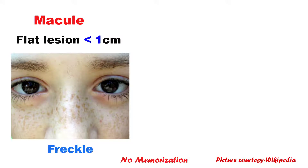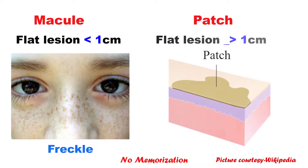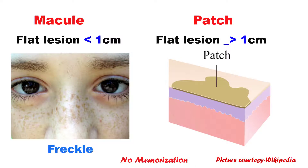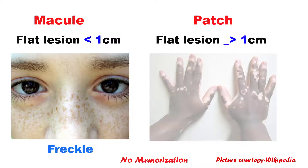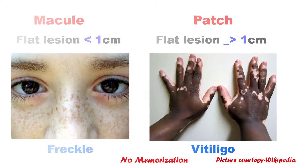Here you can see a picture. Now the patch — it is a similar skin lesion as macule but equal to or more than 1 cm. A good example is vitiligo.